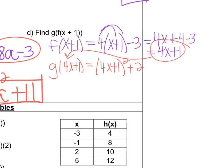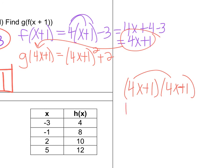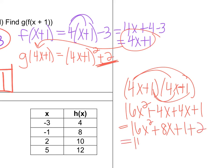So I'm going to input 4x plus 1 into the G equation: (4x plus 1) squared plus 2. We need to multiply this out. If we multiply out (4x plus 1) squared: 4x times 4x is 16x squared, 4x times 1 is 4x, 1 times 4x is 4x, and 1 times 1 is positive 1. So this equals 16x squared plus 8x plus 1. But remember, we have the plus 2 on the outside, so when I simplify all of this I get 16x squared plus 8x plus 3.